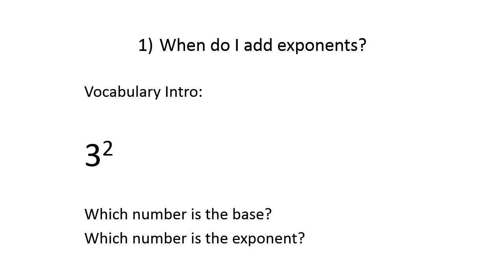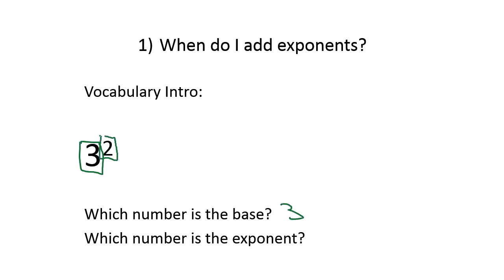Let's take a look at our first rule and some vocabulary associated with it. Suppose we have three to the second power. The three is the base and the two is the exponent. You always know it's the base because it's the lower, larger number, and the exponent is the smaller number to the right of and above the base.